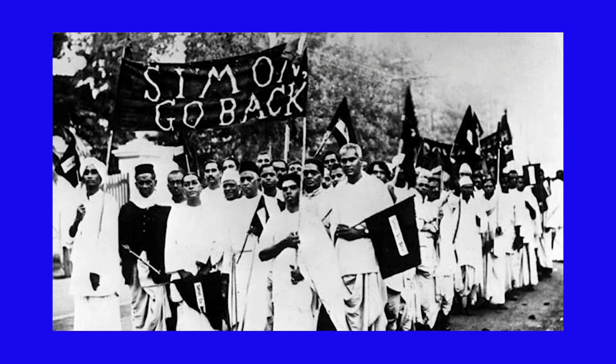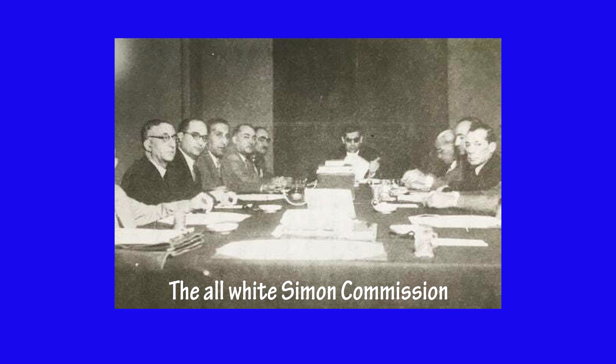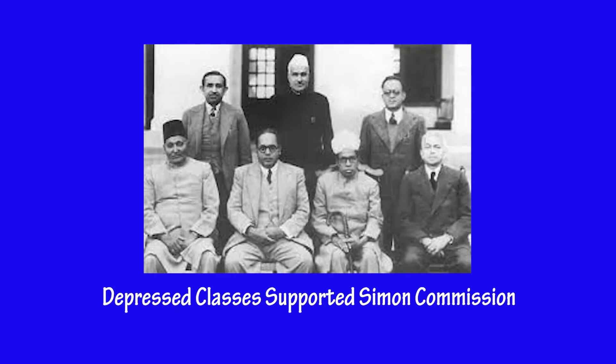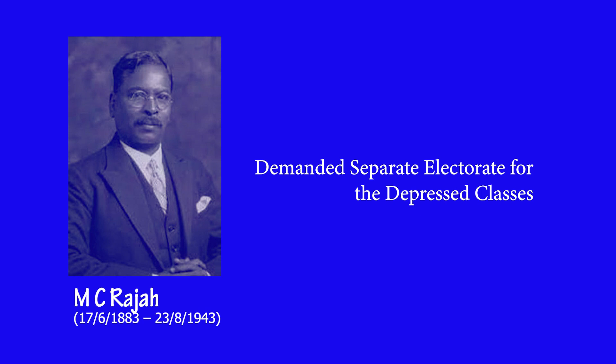The Simon Commission was announced and formed by the British government to recommend whether India was ready for constitutional advance. Since it was an all-white commission, the Congress boycotted it along with other major political parties. However, the depressed classes supported the commission. Here, M.C. Raja demanded a separate electorate for the depressed classes, but the Simon Commission rejected the demand at that time.